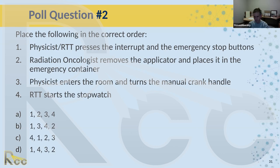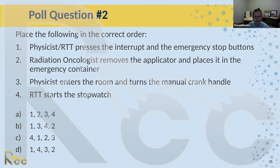The correct total order is: first, the physicist or therapist presses interrupt and emergency stop (A); second, someone starts the stopwatch (D) — though you could argue starting the stopwatch when you hit interrupt, making D potentially first; third, the physicist enters the room and tries the crank (C); and last, if the crank doesn't work, the radiation oncologist physically removes the applicator (B). The manual removal by the oncologist is the last resort.